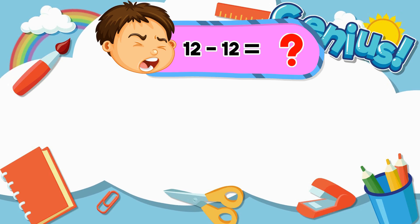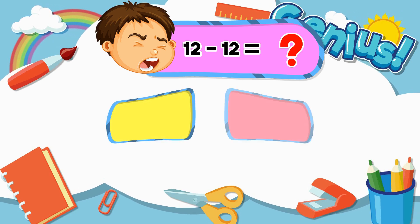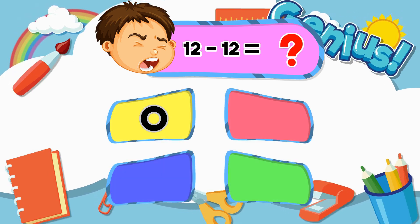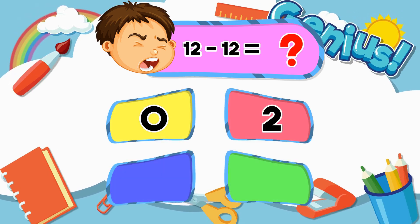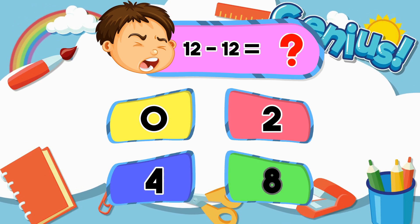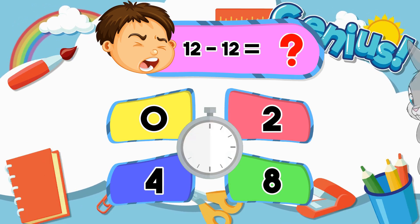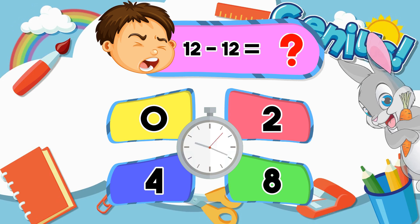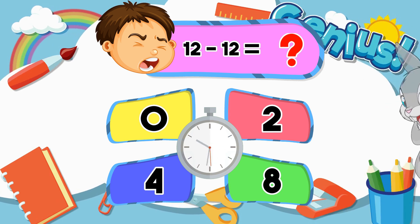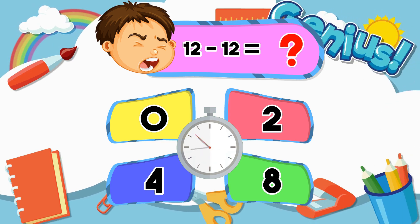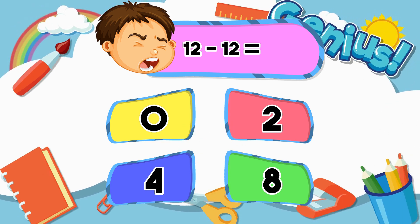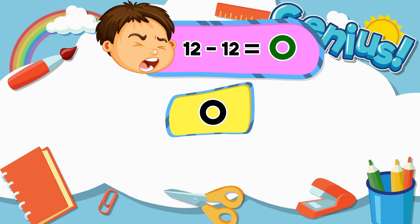What is twelve minus twelve? Zero. Two. Four. Eight. Zero.